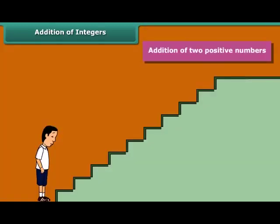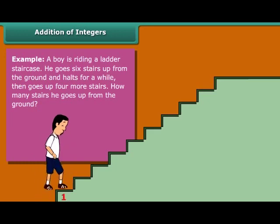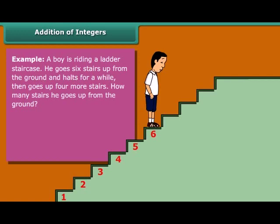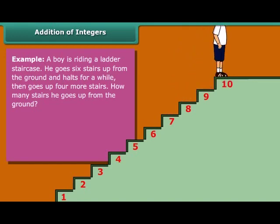Addition of two positive numbers. Example: A boy is riding a ladder staircase. He goes six stairs up from the ground and holds for a while, then goes up four more stairs. How many stairs he goes up from the ground? Plus 6 plus plus 4 is equal to plus 6 plus 4, which equals plus 10.